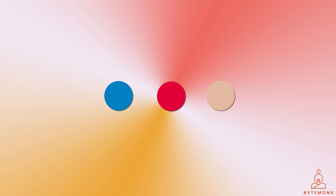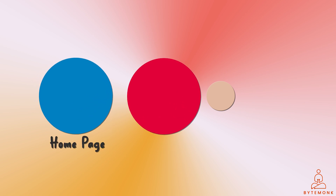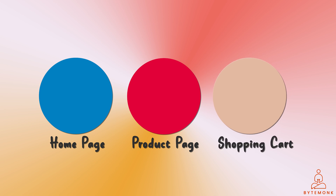Each microfrontend is responsible for its own UI, logic, and data, and they communicate with each other through well-defined APIs. This means that you can change or update individual microfrontends without affecting the rest of the application. For example, you can have one microfrontend for the homepage, another for the product page, and another for the shopping cart page.